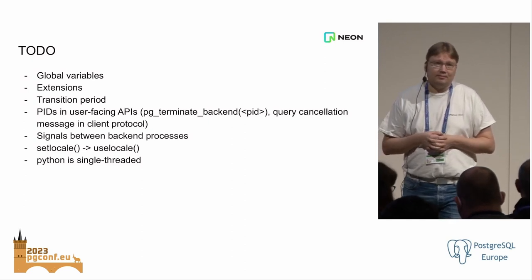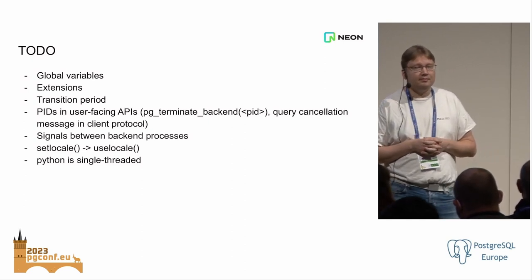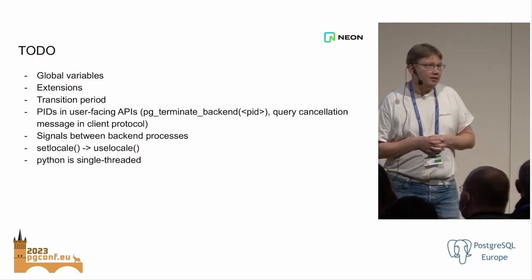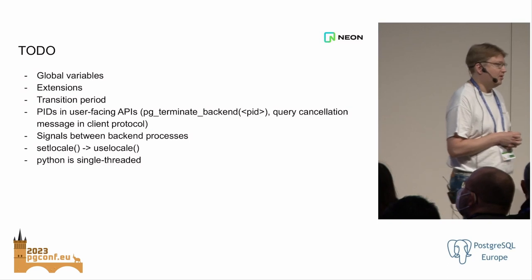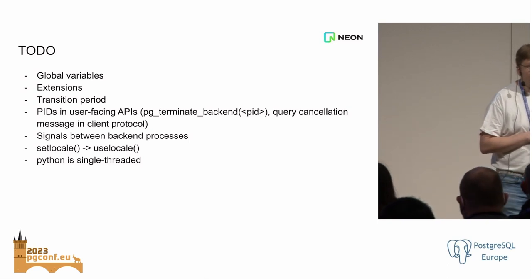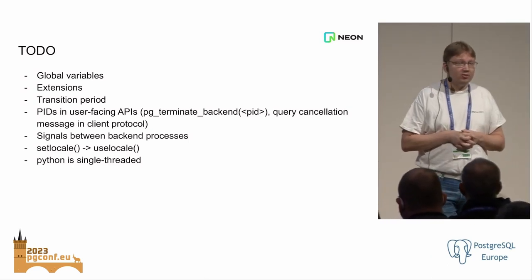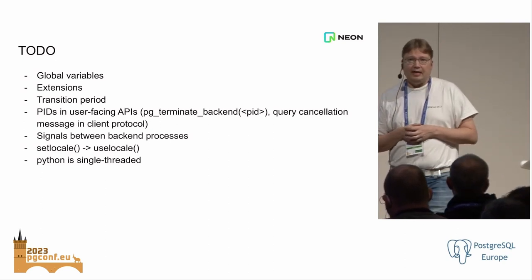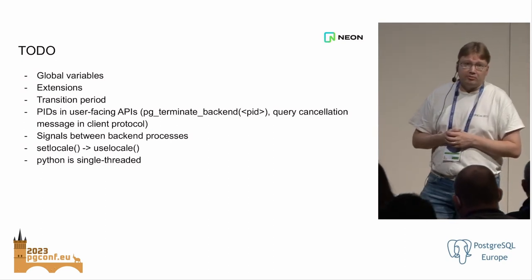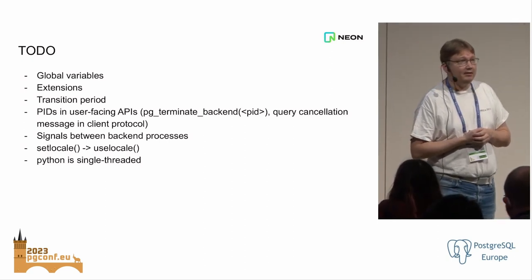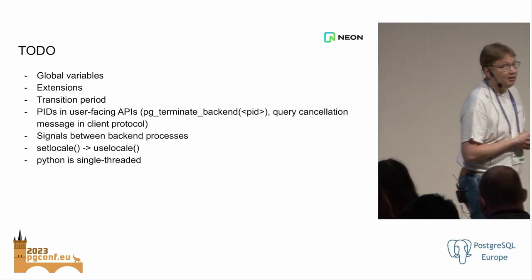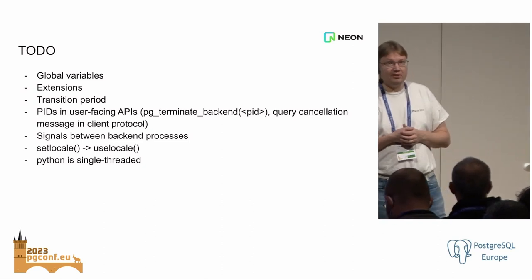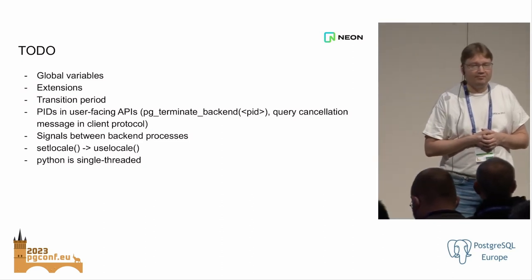Q: What about connection cleanup when a connection terminates — is that currently under control in terms of resources? A: I think it's pretty well okay. Memory is allocated in memory contexts, so we can drop the top memory context and all of that goes away. Other resources — we use resource owners to track them. If we would have leaks there, I think we would already have a problem. I don't think that's a serious problem. We might have bugs there in the first version, but we'll fix them.